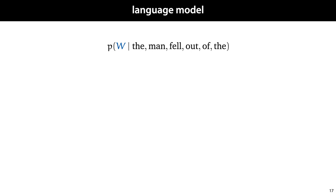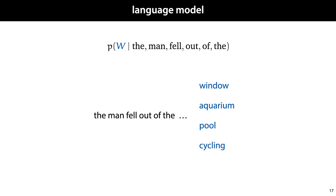Note that getting this exactly right is no easy task. For instance, if we look at the partial sentence 'the man fell out of the' and look at what kind of words might complete it — for instance, these four words — a relatively simple language model should be able to tell us that 'cycling' has the lowest probability because it doesn't fit grammatically. The other three words, 'window', 'aquarium', and 'pool', all fit grammatically, but should still get different likelihoods. For this, we need a language model that actually understands what these words mean. You can fall out of a window and an aquarium, but falling out of a pool is usually physically impossible — so 'pool' should have a lower probability than 'aquarium' but higher than 'cycling'. For now, we will limit our expectations and look at a very simple way of building one.